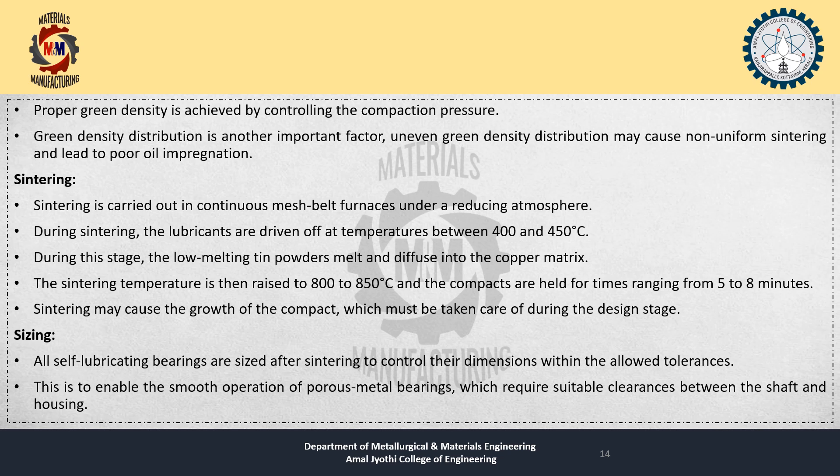Sintering is carried out in a continuous mesh belt furnace in a reducing atmosphere. During sintering, the lubricants are driven off at a temperature between 400 and 450 degrees Celsius. The low melting tin powders melt and diffuse into the copper matrix. The sintering temperature is then raised to 800 to 850 degrees Celsius and the compacts are held for 5 to 8 minutes. Sintering may cause growth of the compact, which must be taken care of during the design stage.